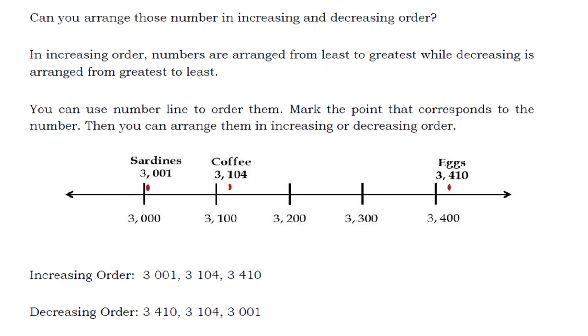Can you arrange those number in increasing and decreasing order? In increasing order, numbers are arranged from least to greatest while decreasing is arranged from greatest to least. You can use number line to order them. Mark the point that corresponds to the number.